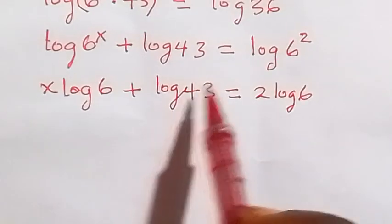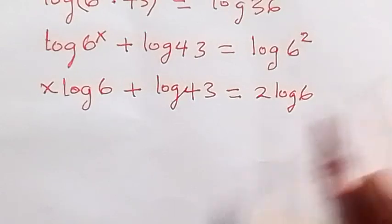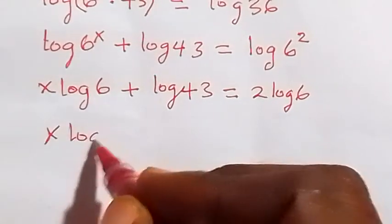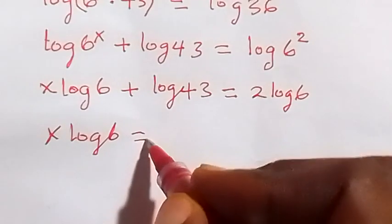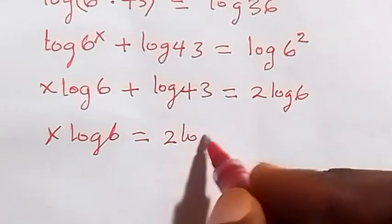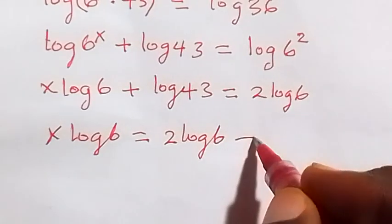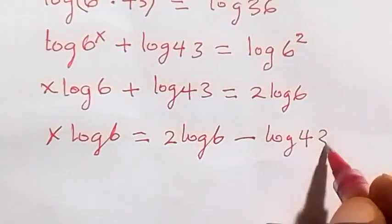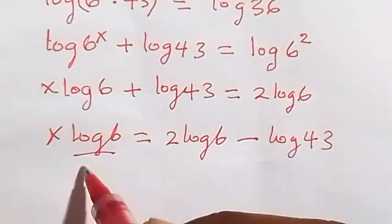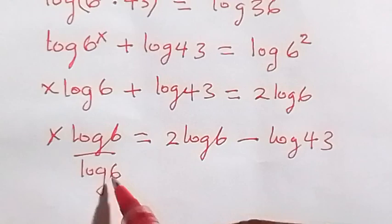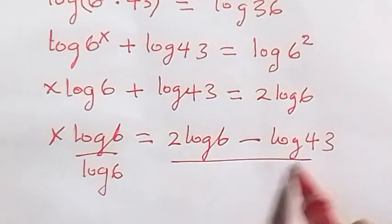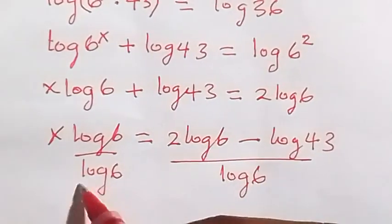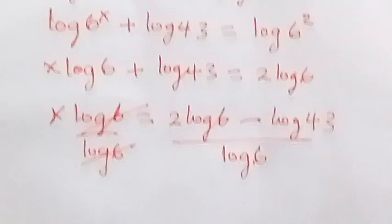In the next step we can take log 43 to this side, so it will become minus. So we have x log 6 equals to 2 log 6 minus log 43. Then we divide both sides by log 6, so as to cancel log 6 on this side, and divide this side also by log 6. Log 6 cancels out here.